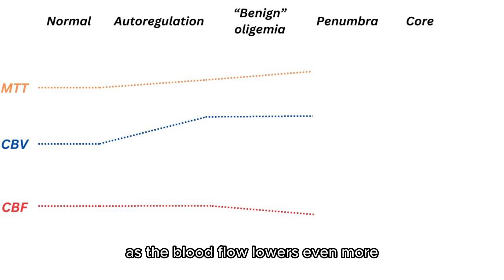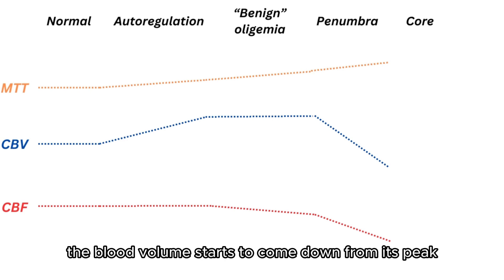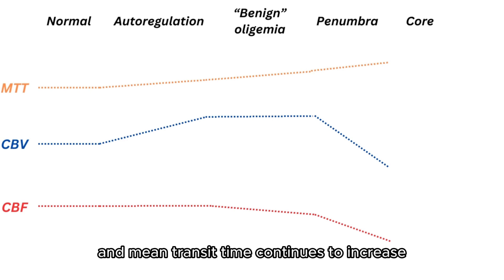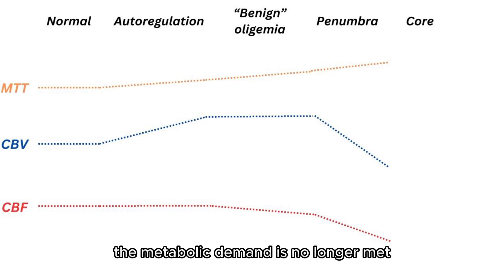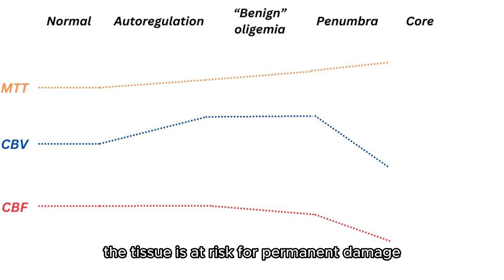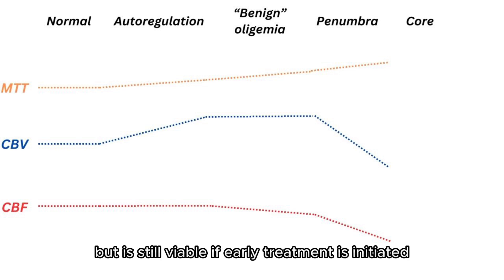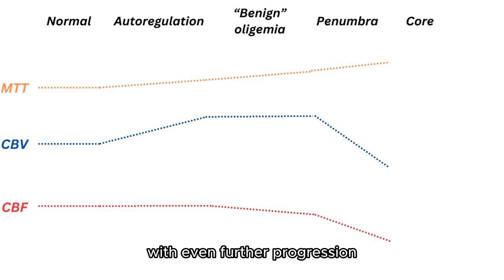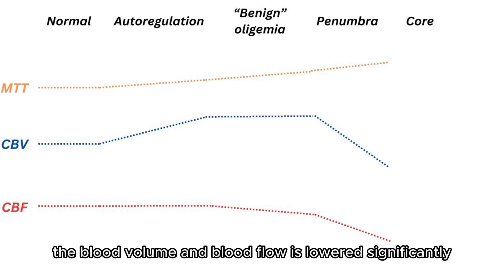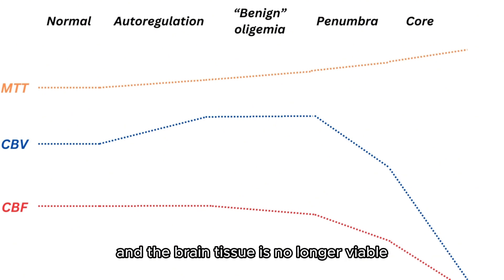As blood flow lowers even more, the blood volume starts to come down from its peak and mean transit time continues to increase. At this point, the metabolic demand is no longer met and clinical symptoms become apparent. The tissue is at risk for permanent damage but is still viable if early treatment is initiated — so-called penumbra. With even further progression, blood volume and blood flow are lowered significantly, and the brain tissue is no longer viable — it becomes the ischemic core.